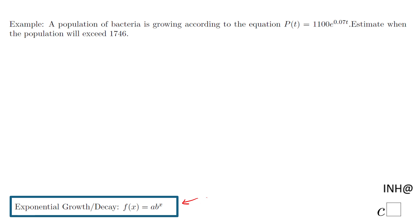The population of bacteria is growing according to this equation, which says P(t) equals 1,100 times e to the power of 0.07t, and we need to find when the population will exceed 1,746. By the way, in case you need it, this is the initial population.